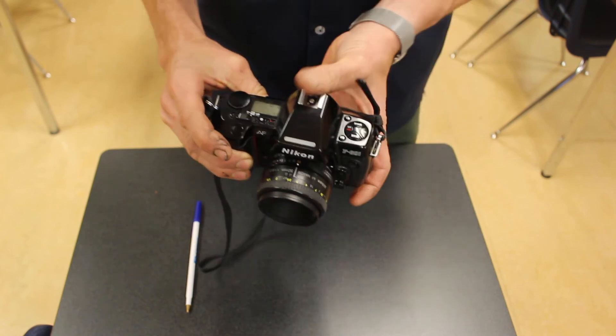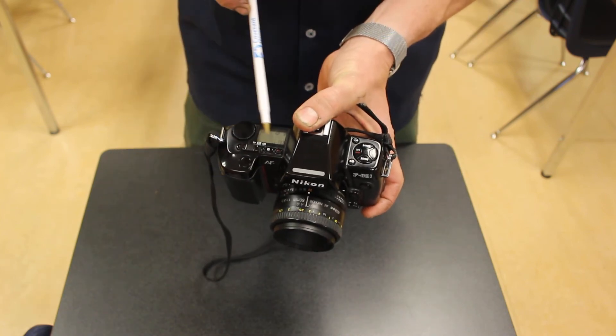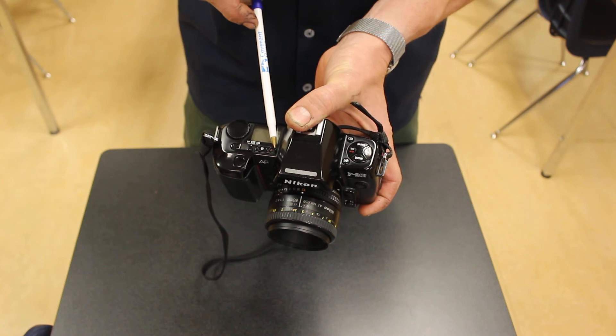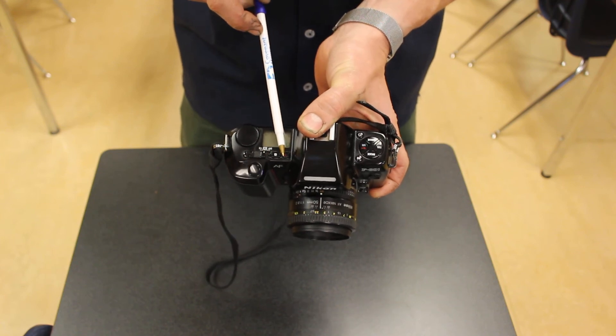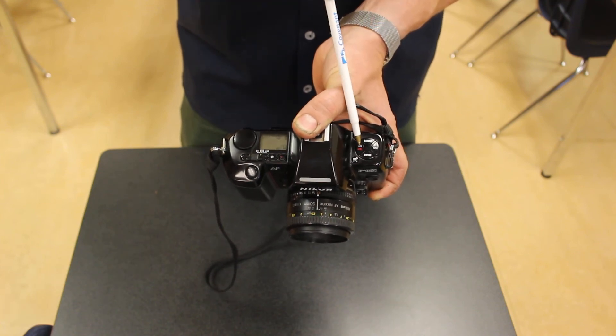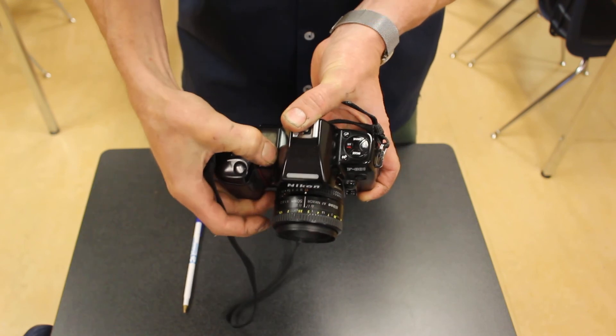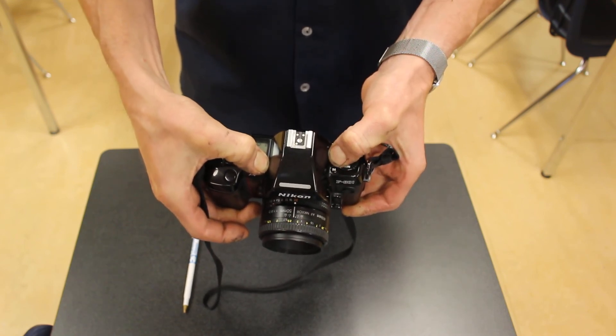To rewind your film, you'll see there are two buttons on the camera that are indicated, and they have a red mark on them. One there and one here. If you hold both of those down at the same time, your film will rewind.